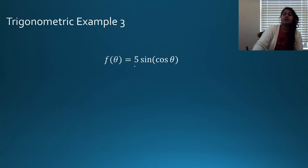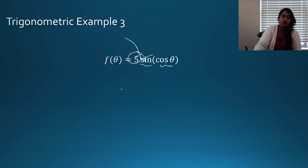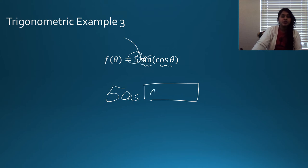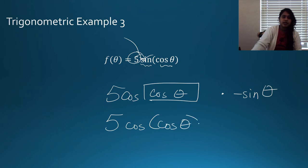Here I have another tricky example. The 5 is a constant multiple attached to the outside, so I bring it down. The derivative of sine is cosine, and I leave the inside alone, times the derivative of the inside. The derivative of cosine theta is negative sine theta. So the result is 5 cosine of cosine theta, times negative sine theta.